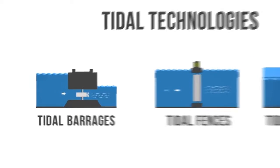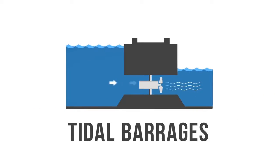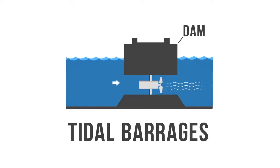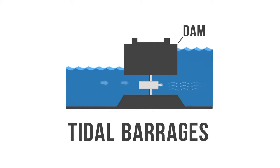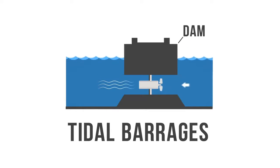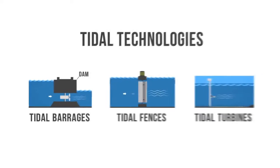Tidal barrages are the most efficient tidal energy sources. A tidal barrage is a dam that utilizes the potential energy generated by the change in height between high and low tides. This energy turns a turbine or compresses air, which in turn creates electricity.